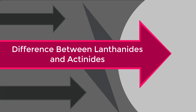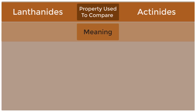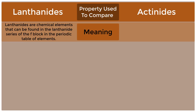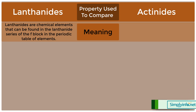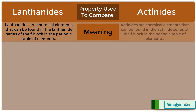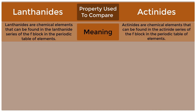Difference between lanthanites and actinites. Lanthanites are chemical elements that can be found in the lanthanite series of the F-block in the periodic table of elements. Actinites are chemical elements that can be found in the actinite series of the F-block in the periodic table of elements.